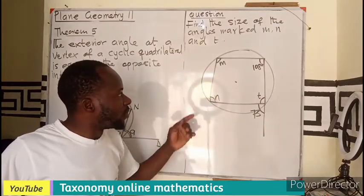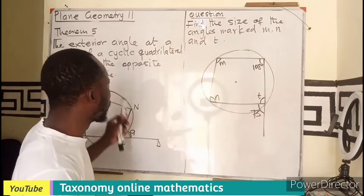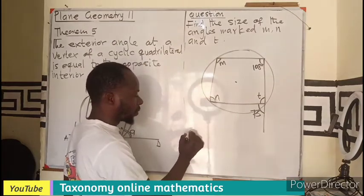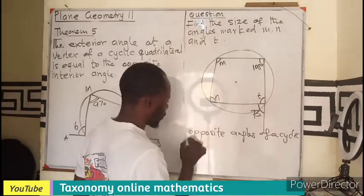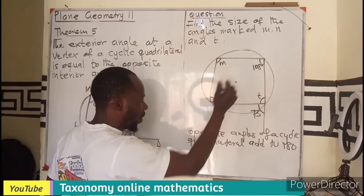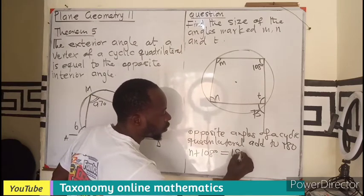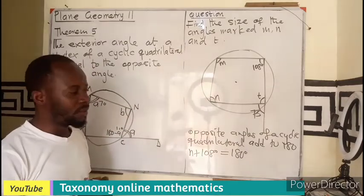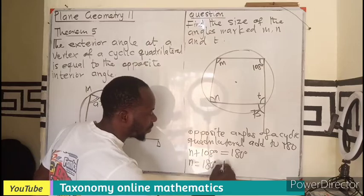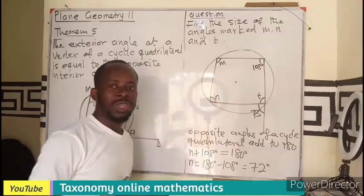So what will I do? First of all, I am seeing this angle is opposite to that angle. So I can quote the theorem that says that the opposite angles add up to 180. Therefore, N plus 108 degrees should give you 180 degrees. So from that, N is going to be 180 minus 108 and that will give us 72 degrees.